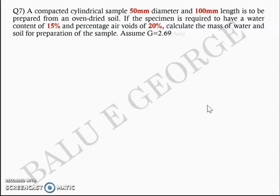You can take the specific gravity of solids as 2.69. I would suggest you pause this video for a second and read through the question carefully to understand the concept. You are asked to calculate the mass of water and the mass of soil to prepare a cylindrical sample at a water content of 15% and percentage air voids of 20%. Since the units are given in millimeters, we can initially convert that to kilograms and meter cube as standard.